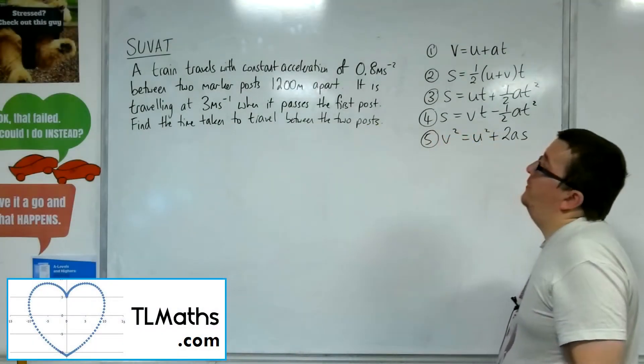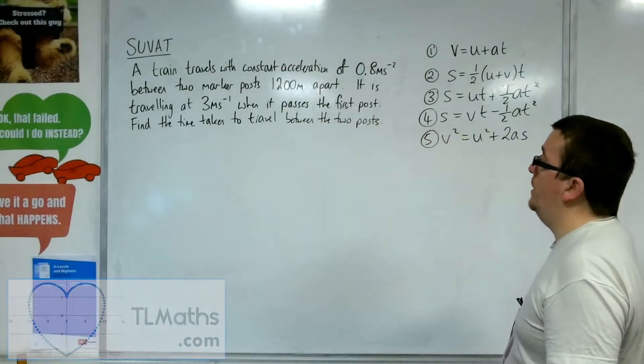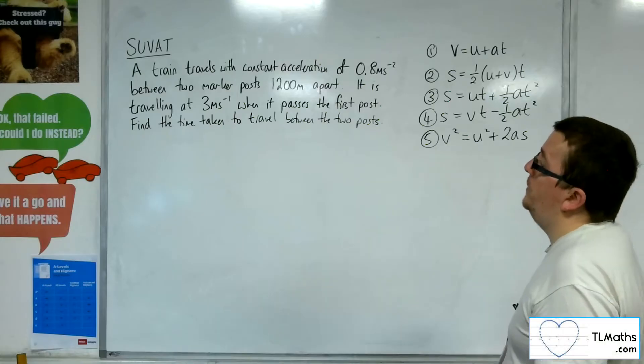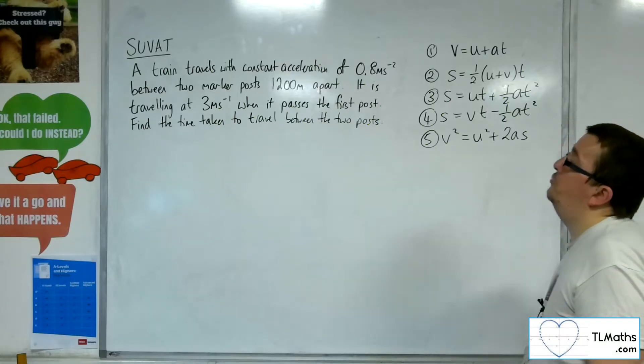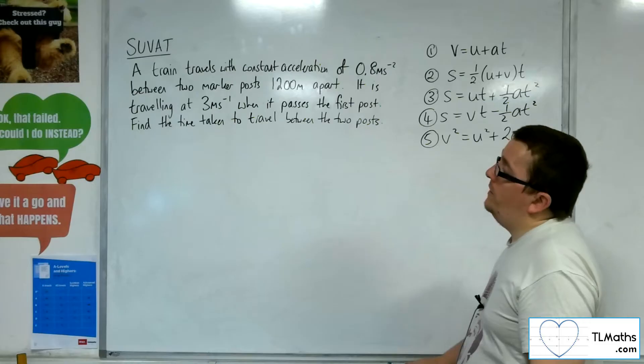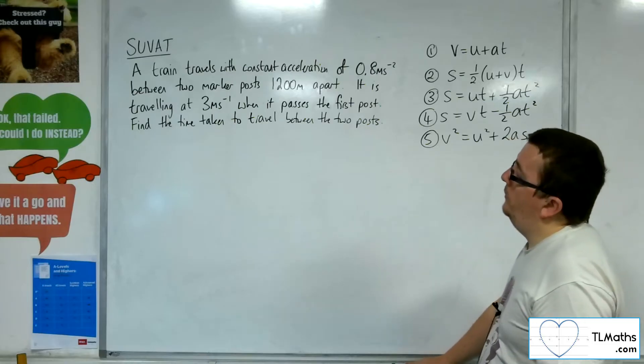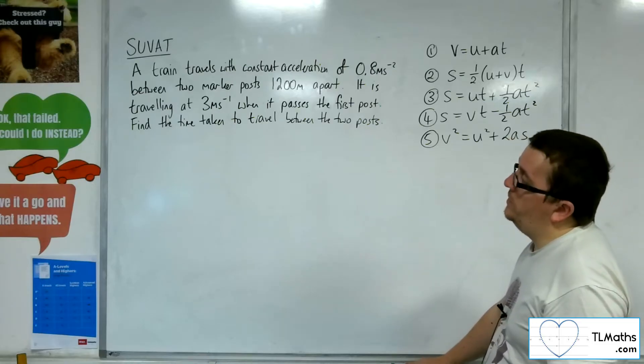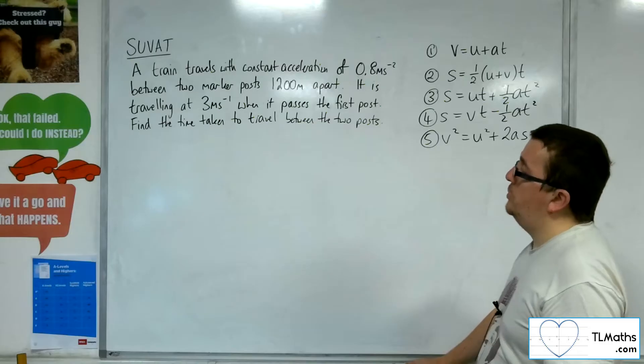So in this video, a train travels with constant acceleration of 0.8 metres per second per second between two marker posts 1,200 metres apart. It is travelling at 3 metres per second when it passes the first post. Find the time taken to travel between the two posts.